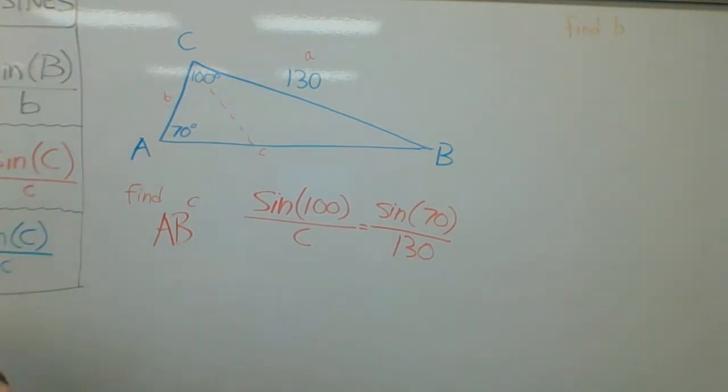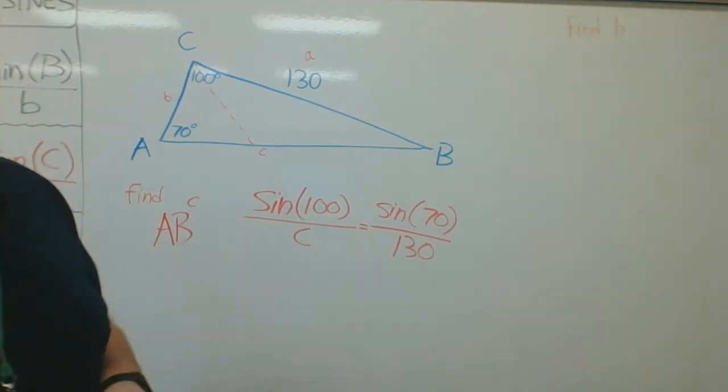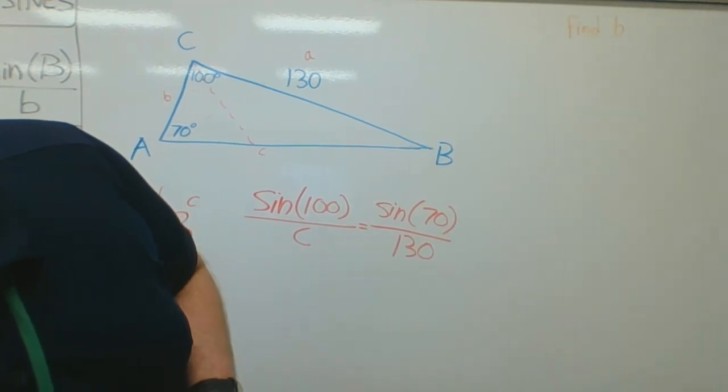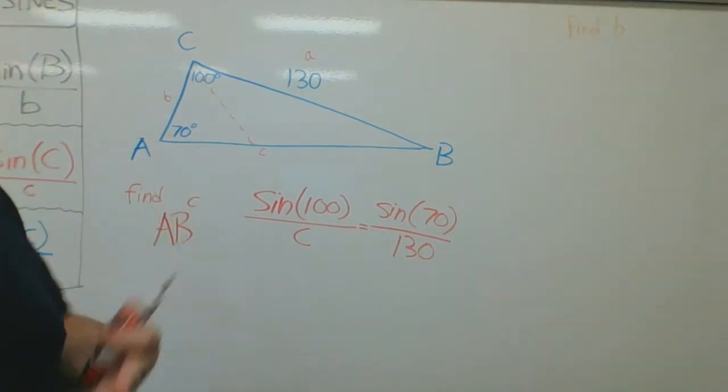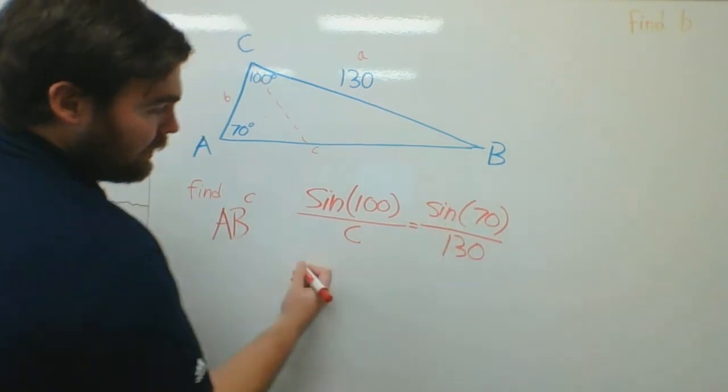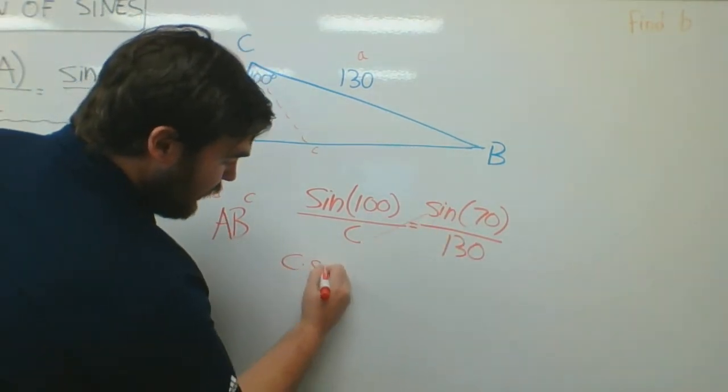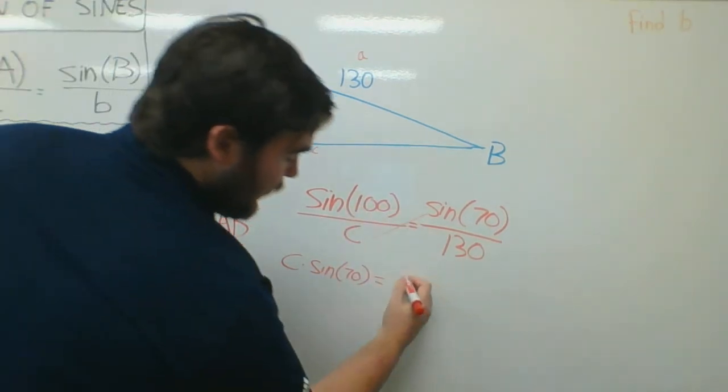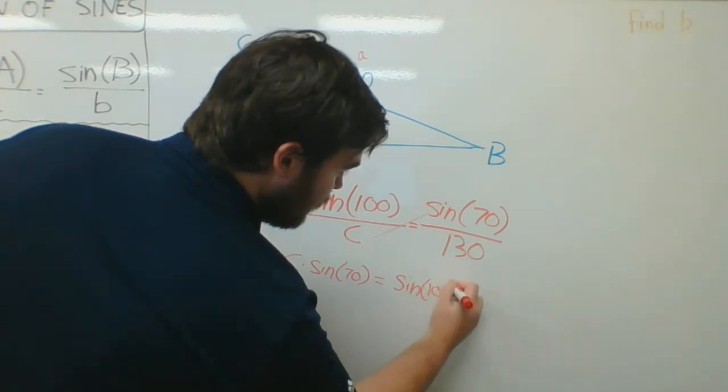So, I'm going to cross multiply. I'm going to say c times sine of 70 is equal to sine of 100 times 130.